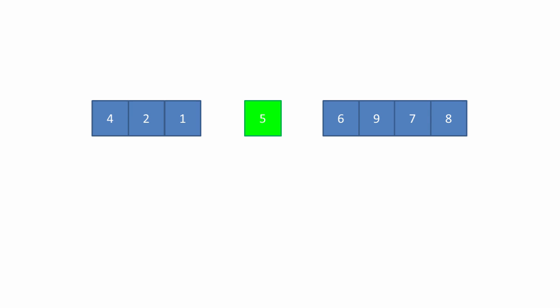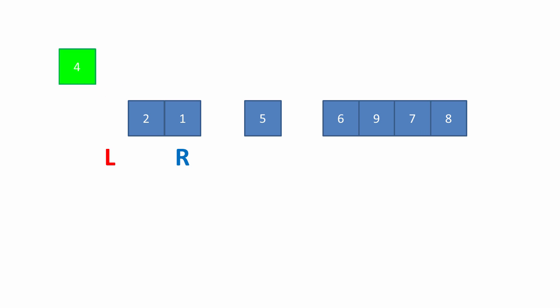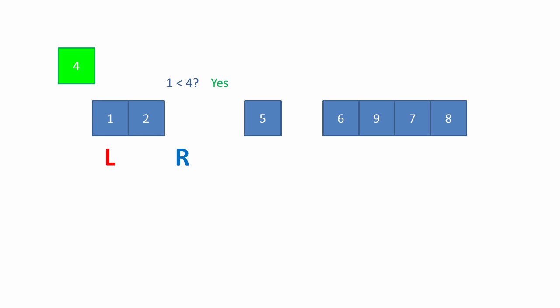So what we're going to do now is repeat the process with the left sublist and the right sublist. Let's start with the left sublist. We need a left and a right pointer, and we choose a pivot value which we put to one side. Then we ask the question: is one less than four? The answer to this question is yes, so we move the one.